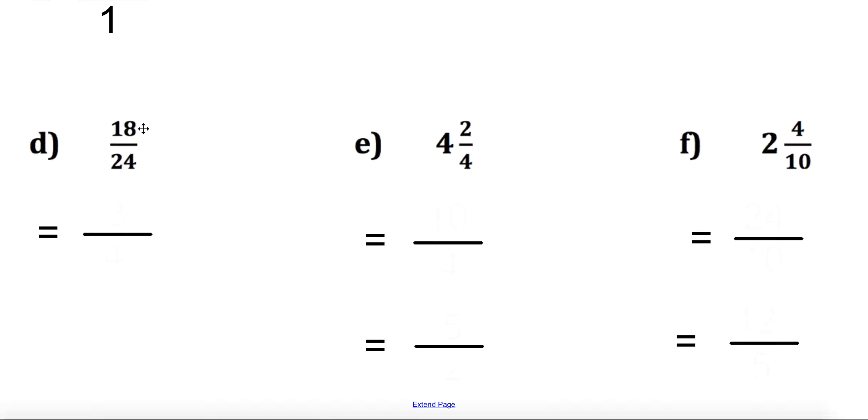Looking at the next question, we have 18 and 24. Now, you might say these are both divisible by 2, but there's a much bigger number that we can look at and makes it a little bit easier. If I divide both of these numbers by 6, I get 3 over 4.